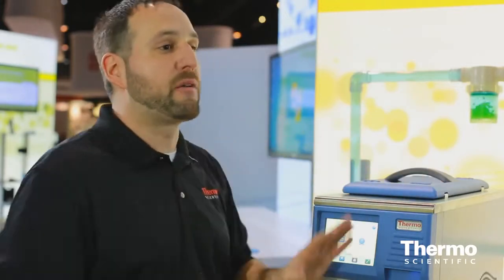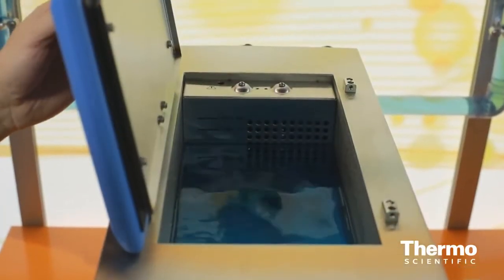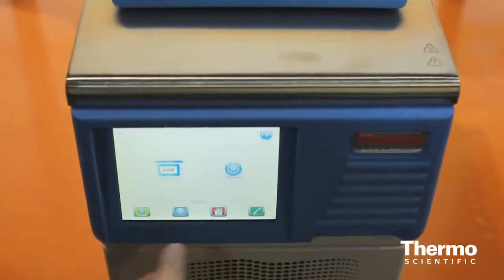Traditionally, bath circulators have a control head and coils in the bath. We got rid of it. Took everything out, put it in the unit in the front, inside the unit itself.